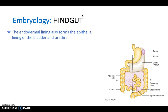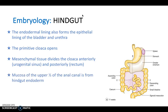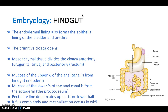For the hindgut: the endodermal lining also forms the epithelial lining of the bladder and urethra, and the primitive cloaca opens. Mesenchymal tissue divides the cloaca into an anterior part — the urogenital sinus — and posteriorly into the rectum. The mucosa of the upper half of the anal canal is from hindgut endoderm, while the lower half is from ectoderm (the proctoderm). The pectinate line demarcates the upper from the lower halves, and recanalization occurs around week 9.